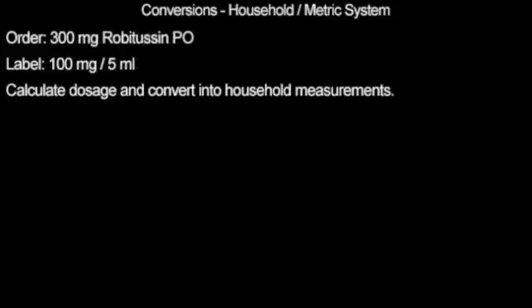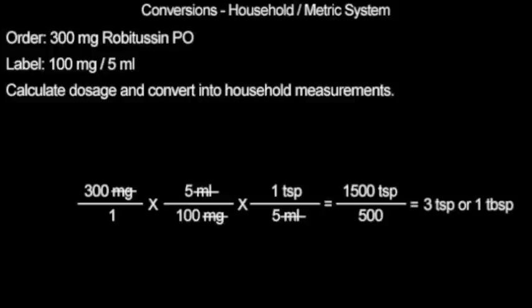Pause the video, try this problem on your own, and continue when you are ready for the answer. 300 milligrams at 100 milligrams per 5 milliliters comes out to being 3 teaspoons or 1 tablespoon.